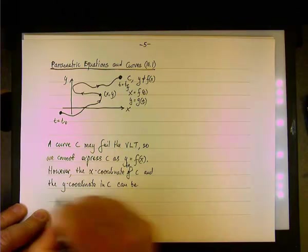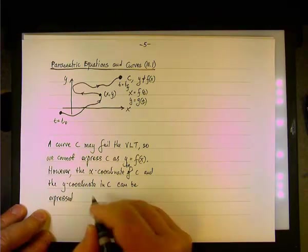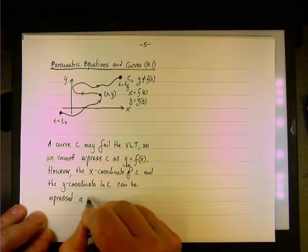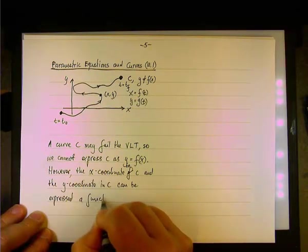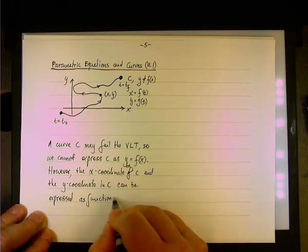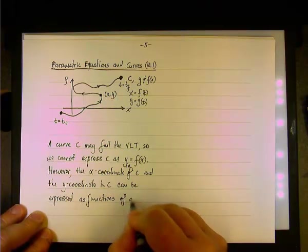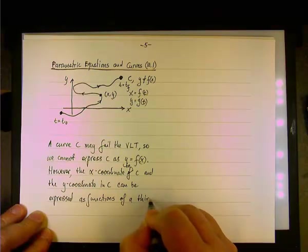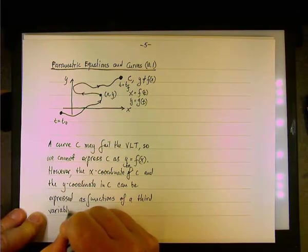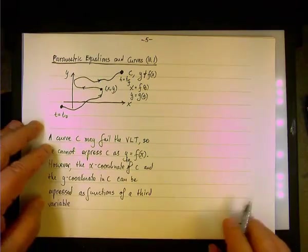And the y coordinate in C can be expressed—actually, it's functions because we have two, one for x and one for y. So, as functions of a third variable.